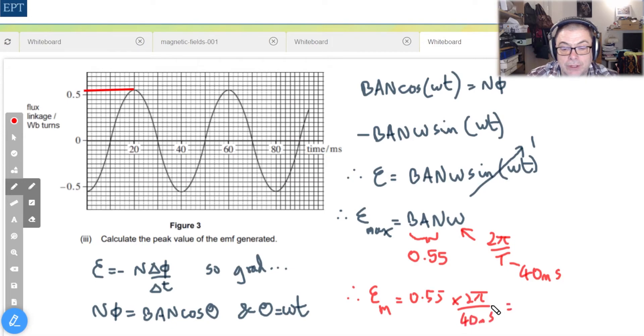Therefore EMF max equals 0.55 times 2π over 40 milliseconds, which comes out as 86.4 volts.